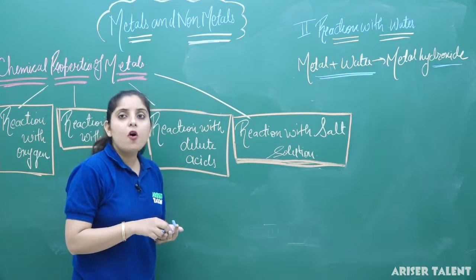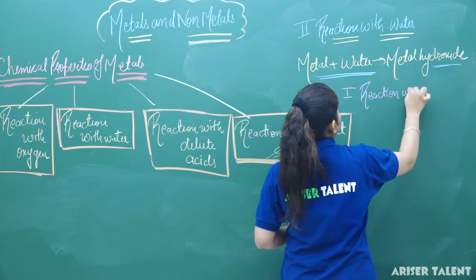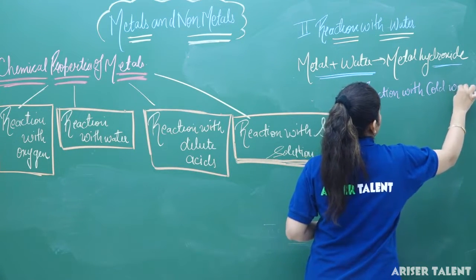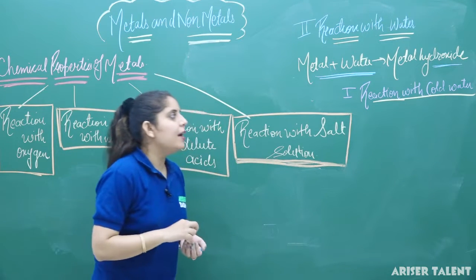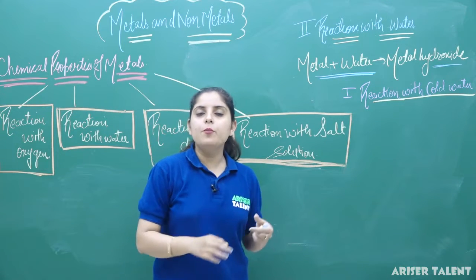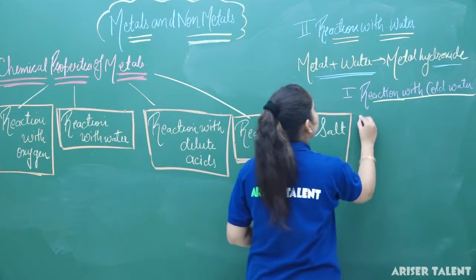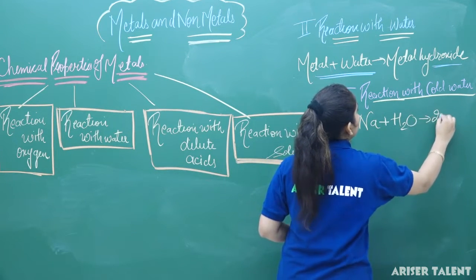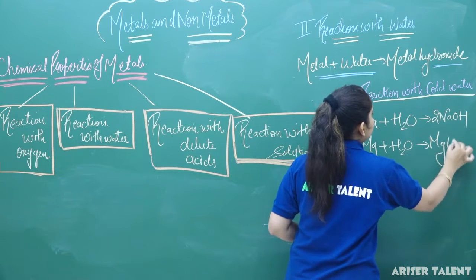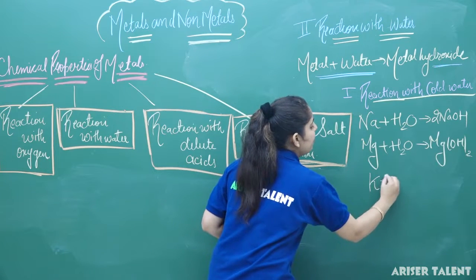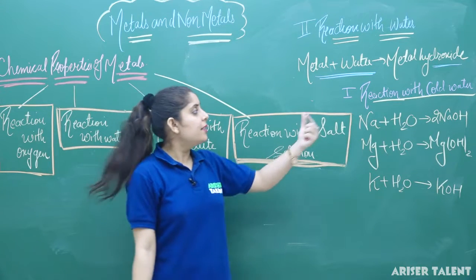In the case of reaction with cold water, sodium, potassium, and magnesium are the first metals which react with cold water and form their corresponding hydroxides. Sodium when reacted with water forms sodium hydroxide. Magnesium when reacted with water forms magnesium hydroxide. Potassium when reacted with water forms potassium hydroxide. These are the reactions that take place in cold water conditions.